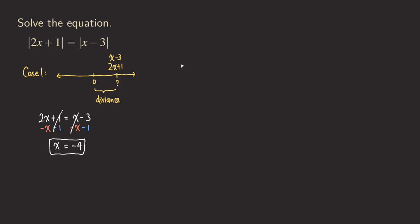Now let's look at Case 2 and draw the number line again. We have two x plus one at some position — let's say it's a positive number with some distance away from zero. The other case is when x minus three can be at a different spot: x minus three can be on the other side of zero, and that is the same distance. So those are the same distance, but in this case they are actually opposite in sign.